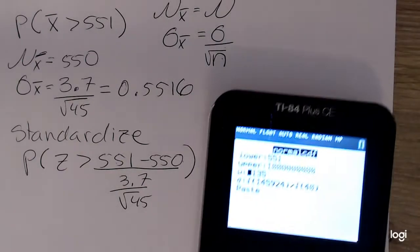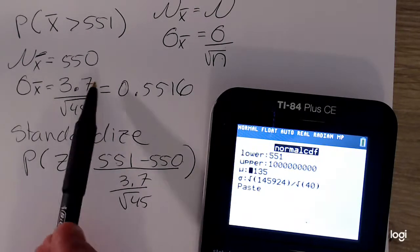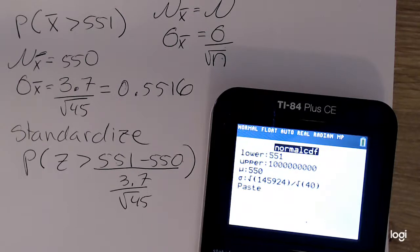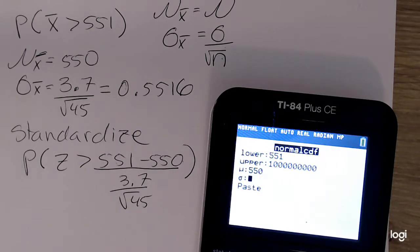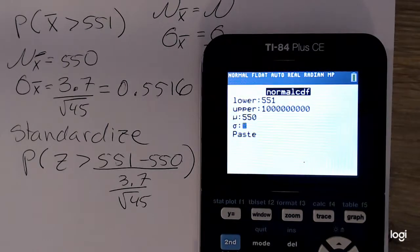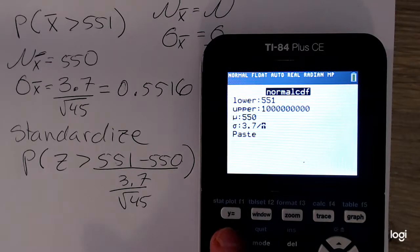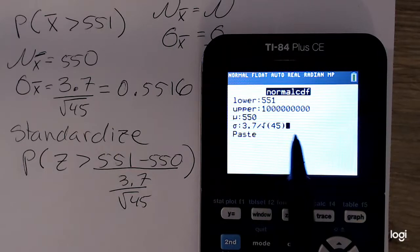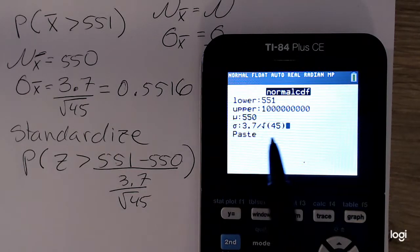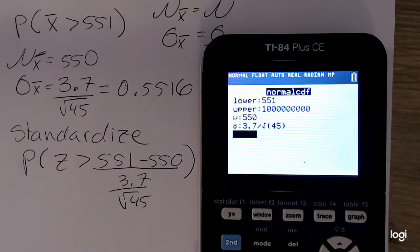Mu is the same as the original population's, 550. Now for your standard deviation, you could put in the decimal approximation here, or if you are feeling lazy, or motivationally inert, you could put in 3.7 divided by the square root of 45 right here, and the calculator will find that standard error of the mean internally. And then we want to paste.